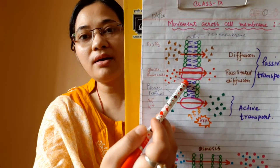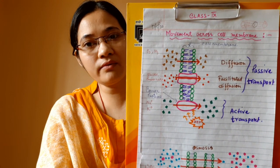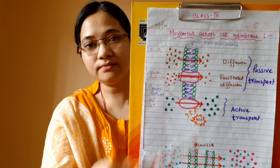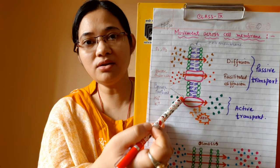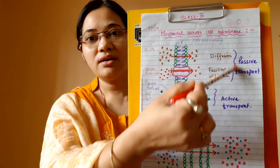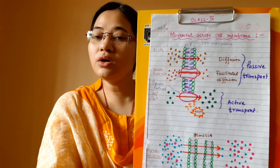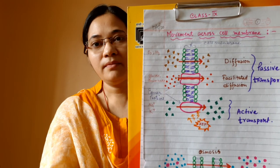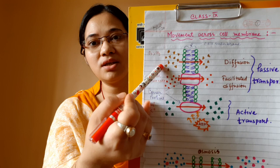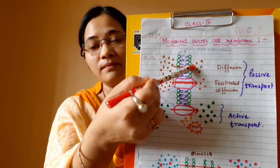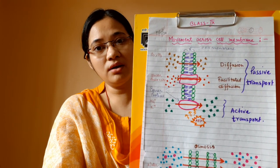I have drawn a very simple diagram of the cell membrane. As we saw in our last video, the cell membrane is made up of phospholipid molecules arranged in a bilayer, with intrinsic proteins present. One side represents the external environment and the other side is inside the cell. Diffusion is the process of movement of solute or gaseous molecules — like oxygen and carbon dioxide — from a region of high concentration to a region of low concentration, directly through the phospholipid molecules.